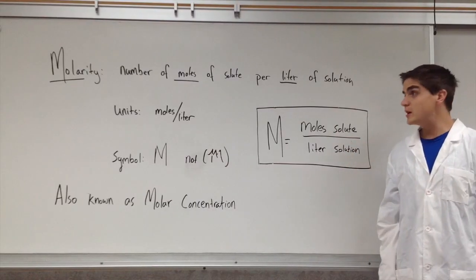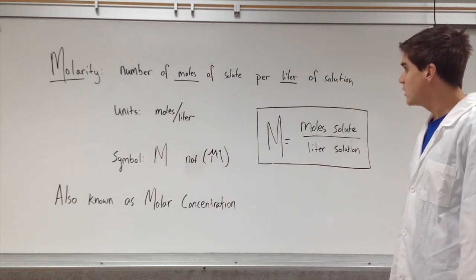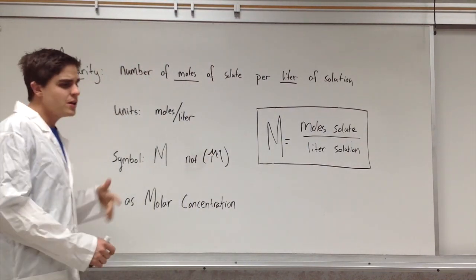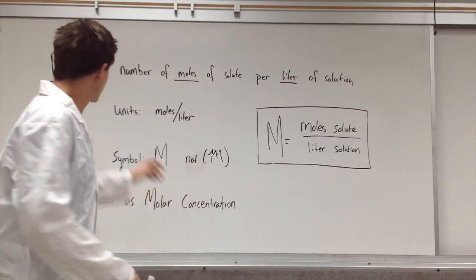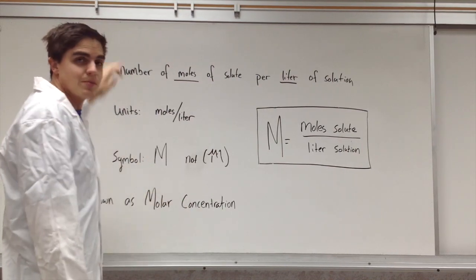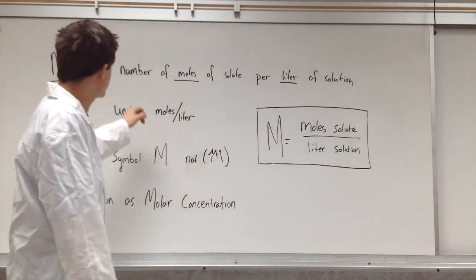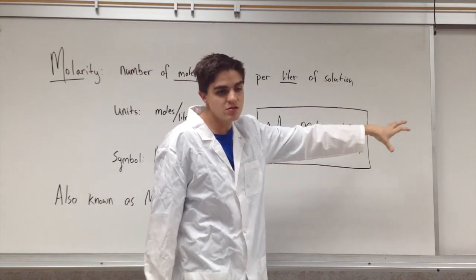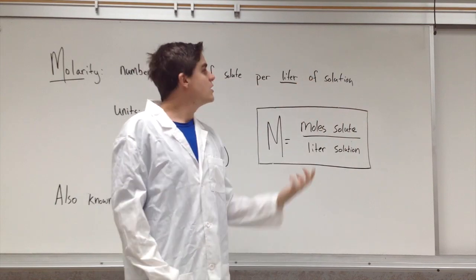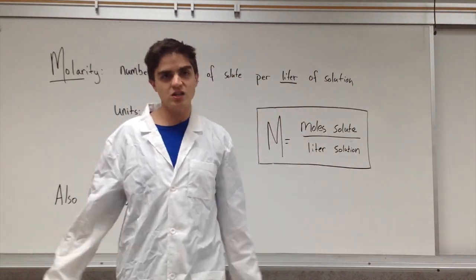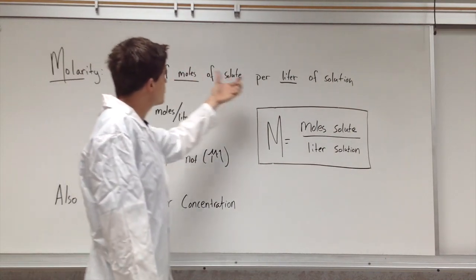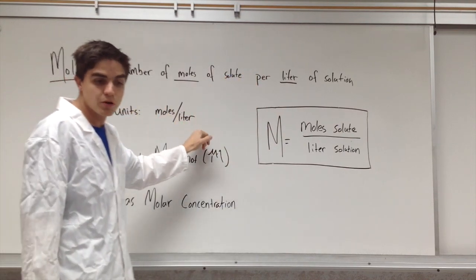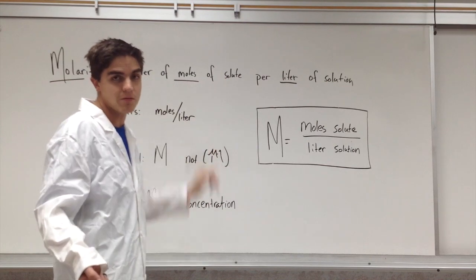So the first thing we want to do is talk about units. Our name for this unit is going to be called molarity. The first thing I do when I see this word molarity is I see the word molar, like moles. So my definition is going to be based on moles somehow, and the definition is the number of moles of solute, the thing being dissolved, per liter of the thing doing dissolving, the solvent. You'll often see me write solution because dissolving it doesn't change the volume significantly. So it's the moles per liter. So our units are going to be moles per liter.